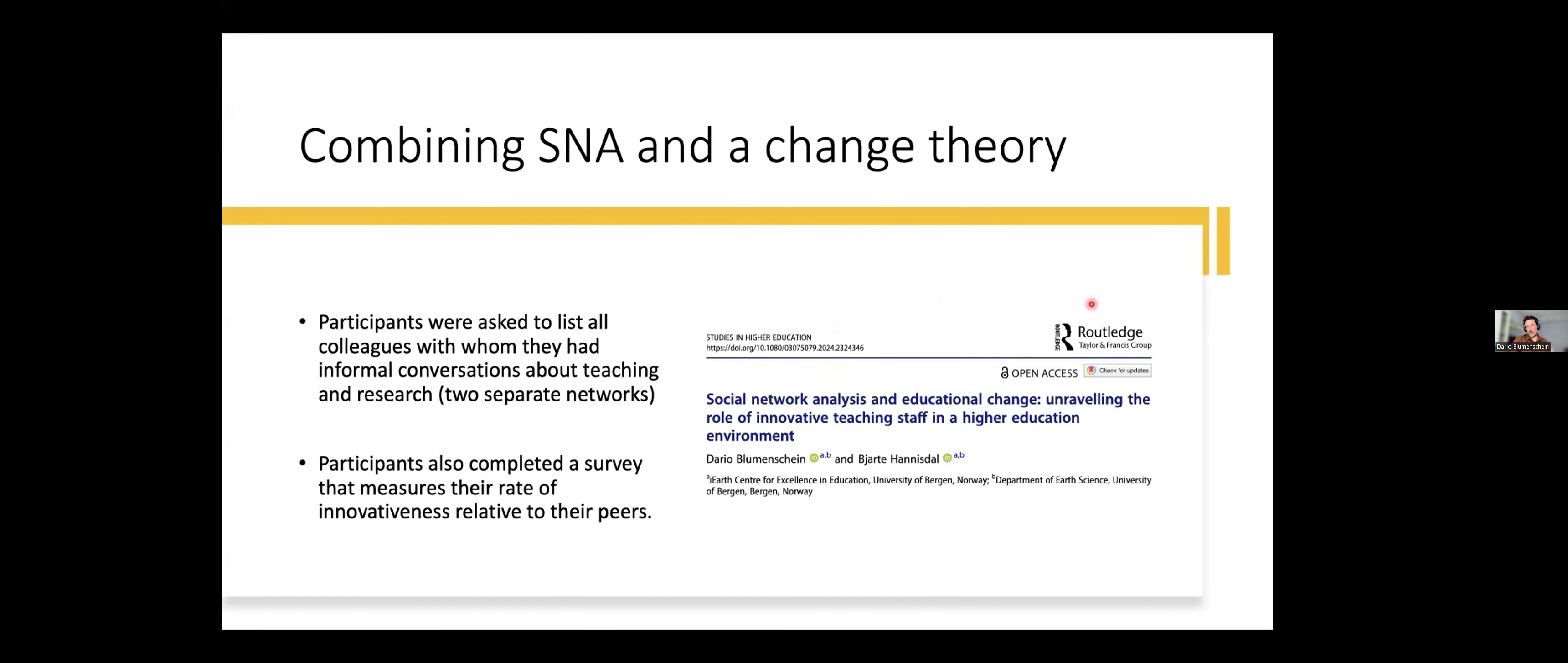And what is the role of these relationships, how many people do I talk to, what's the intensity of these conversations, and also how is that embedded in a larger structure of, in our case, a department. And that's what we basically did in the study in a paper that has been published two months ago or a month ago. We have tried to combine social network analysis or the social network theory with a change theory. And we did it by asking the staff at the Department of Earth Science here in Bergen to list all colleagues with whom they had informal teaching conversations, informal conversations about teaching and about research.